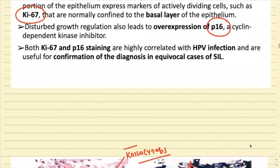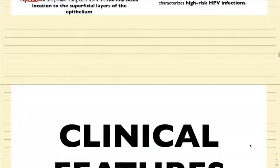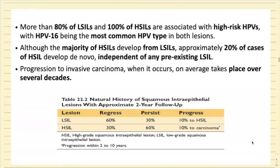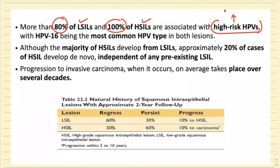Regarding clinical features: more than 80% of L-CIL cases and around 100% of H-CIL cases are associated with high-risk HPV — types 16 and 18. HPV 16 is the most common, accounting for about 60% of all carcinoma cases.